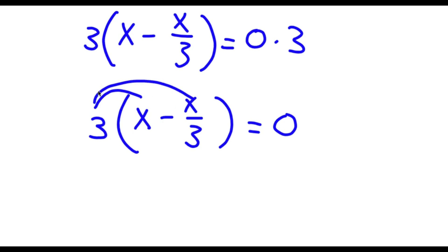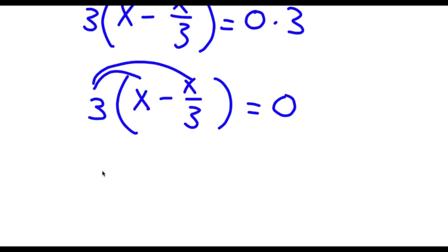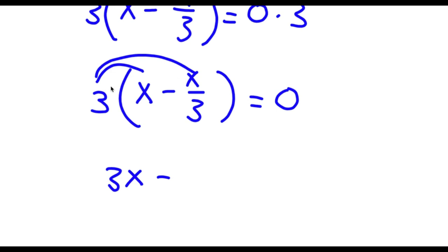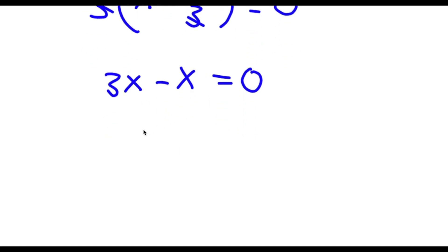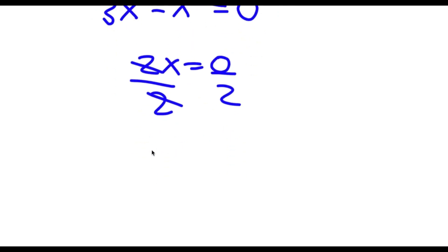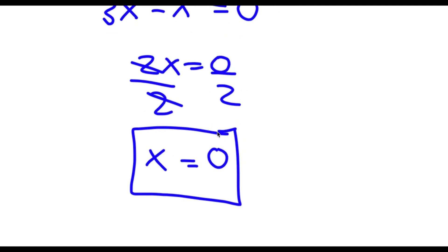I'm going to multiply 3 by all the terms in the parentheses. 3 times x is 3x, and 3 times negative x over 3 is simply going to be negative x because these two 3's cancel out. So now I have 3x minus x is equal to 0. Now 3x minus x is simply equal to 2x, so now I have 2x equals 0. All I need to do is divide both sides by 2 — these two cancel out. Now I'm left with x is equal to 0 divided by 2, which is simply 0. So this is my answer.